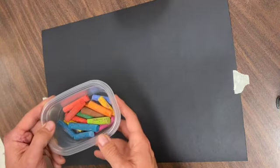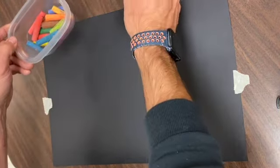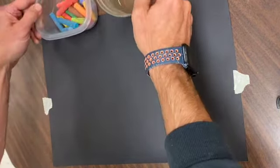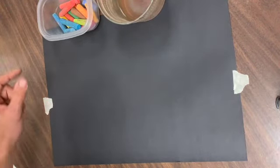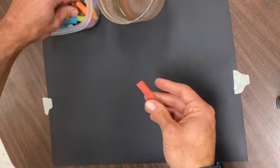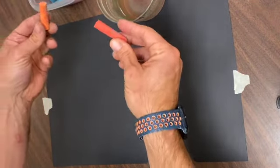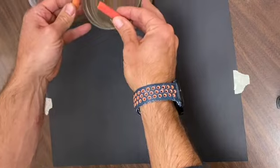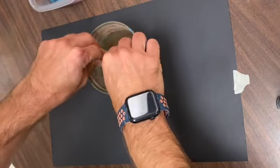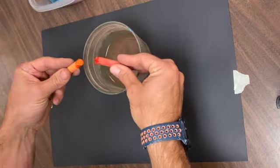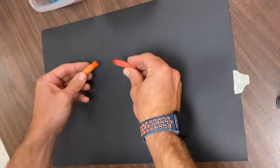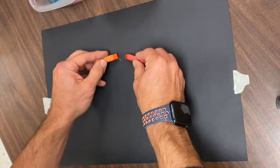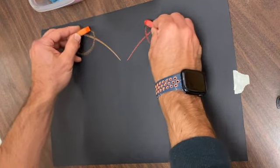This time we're going to be using chalk pastels. You'll also need some water. So I taped my piece of paper to my table, I'm going to choose two colors. Now chalk pastels can get kind of messy, so in order to keep it looking fairly clean, I'm going to dip the two ends of my chalk into the water, then find the middle of that paper, and continue doing what we did with our markers.